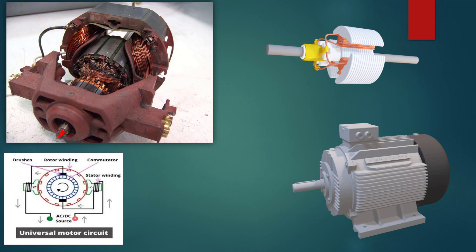The universal motor is a series-wound motor, which is why it has a high starting torque and variable speed characteristics. That variable speed characteristic is what we're taking advantage of to design a motor driver so you can control the speed. It's called a DC series motor because the field is in series with the armature. The universal motor, which operates on both AC and DC, is based on a DC series motor.